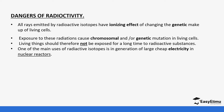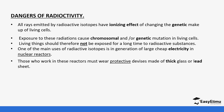One of the main uses of radioactive isotopes is in the production of electricity by nuclear reactors. Those who work in nuclear reactors wear protective devices to avoid exposure. Accidental leaks of radiation can also occur, which is why protection is essential. Weapons like bombs are also made using radioactivity, and these can be used negatively to cause harm, especially in times of war.